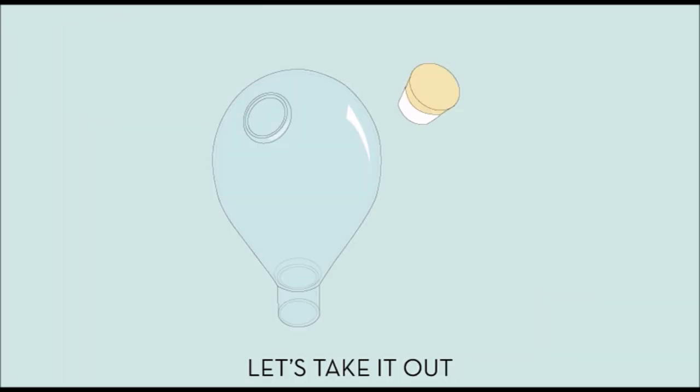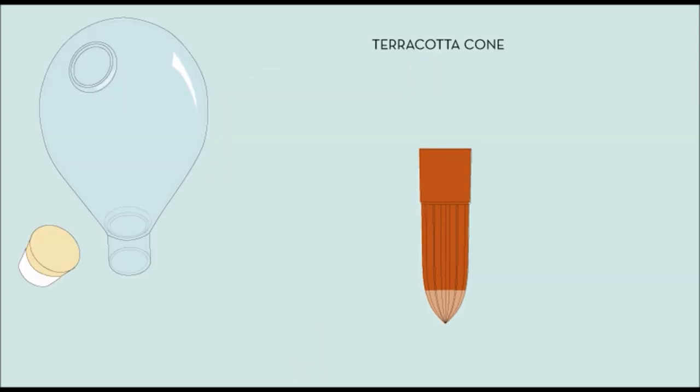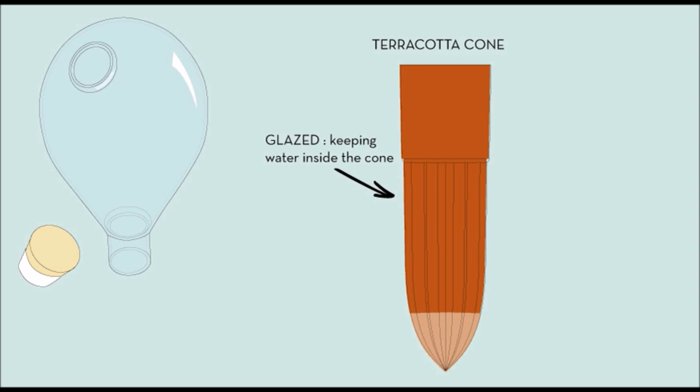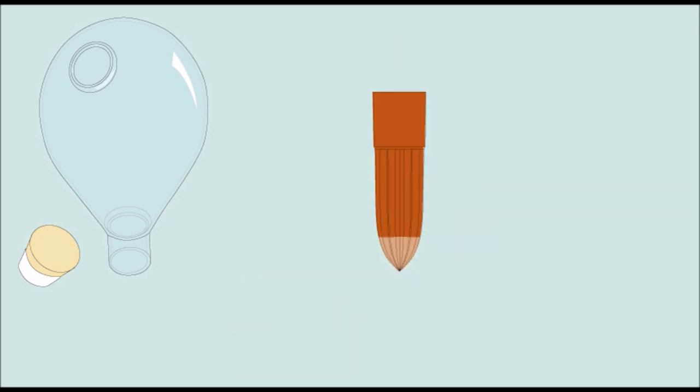Let's take it out. The reservoir, the cork and the cone. And focus on the cone. It's made of terracotta. Part of it is glazed, keeping the water in, and part of it is porous, letting the water seep through.